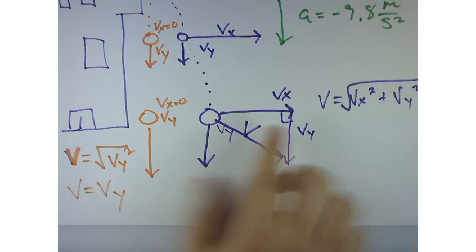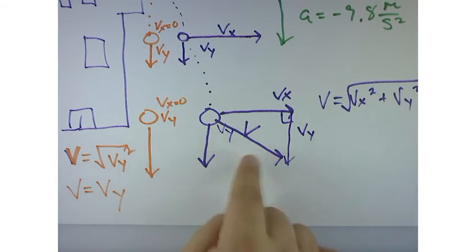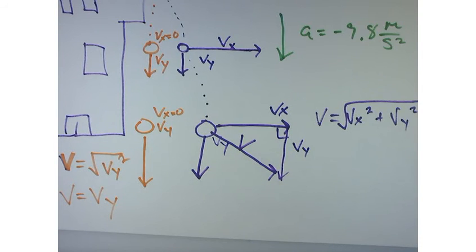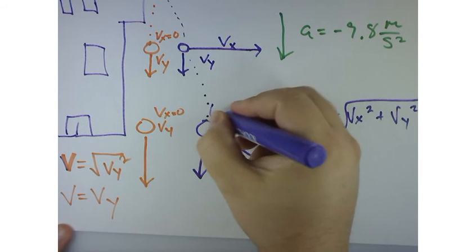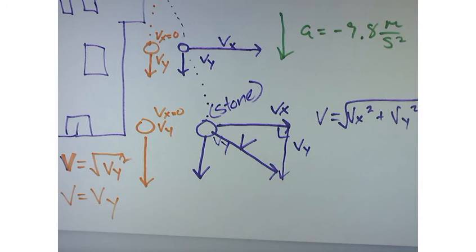So, the overall velocity, v, will be greater for the stone, right? So, this would be greater for the stone.